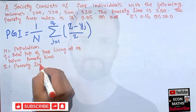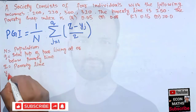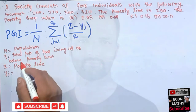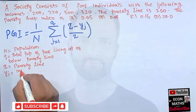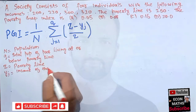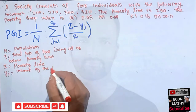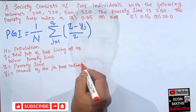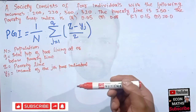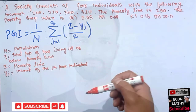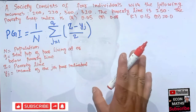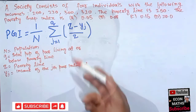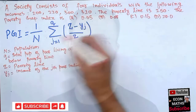y_j represents the income of the poor individual j. One important thing to remember is that individuals whose income is above the poverty line have a gap of zero, so we do not count them when calculating the poverty gap index.